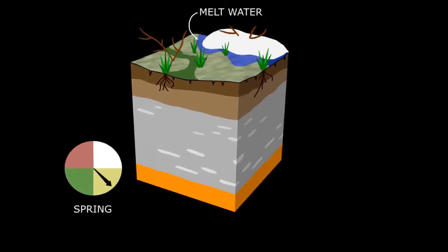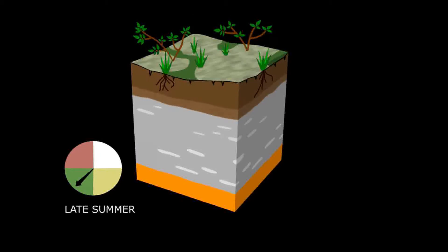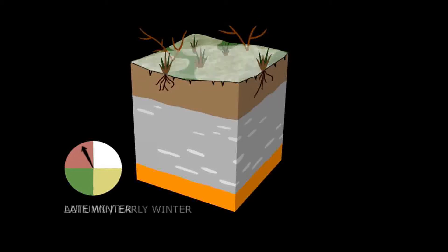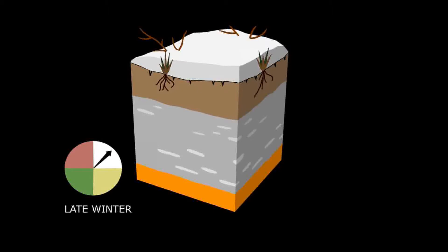You can follow this cycle again: in spring the active layer is thawing out and vegetation develops. In late summer, as we move into autumn and early winter, two-sided freezing occurs and snow comes.